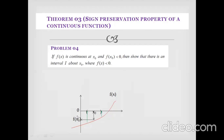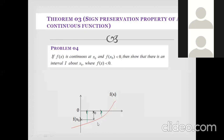If the function is continuous at the point zero and f(0) < 0, then we will get some interval about the point zero. In that interval, all values of f(x) will also be less than zero.